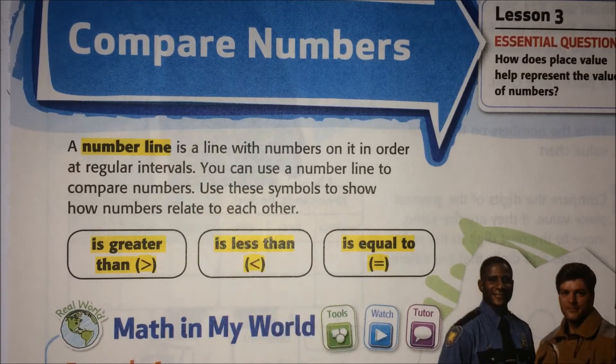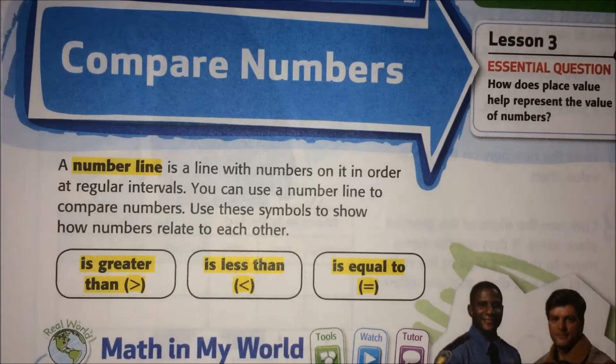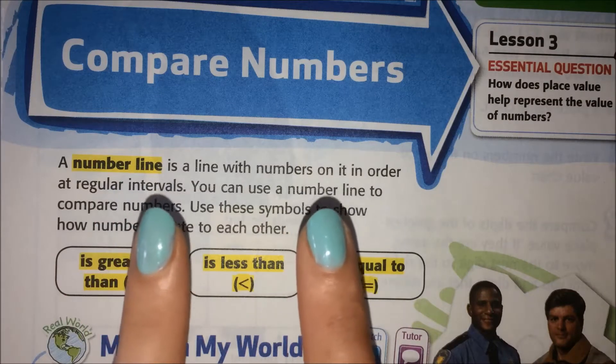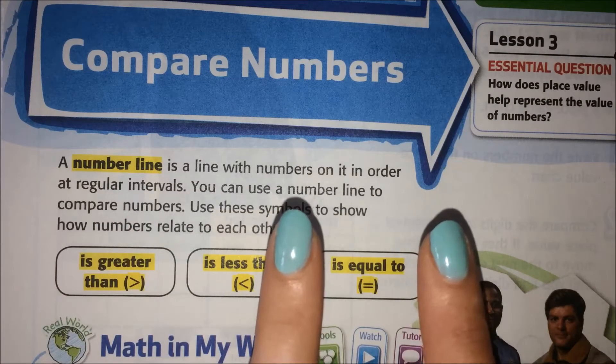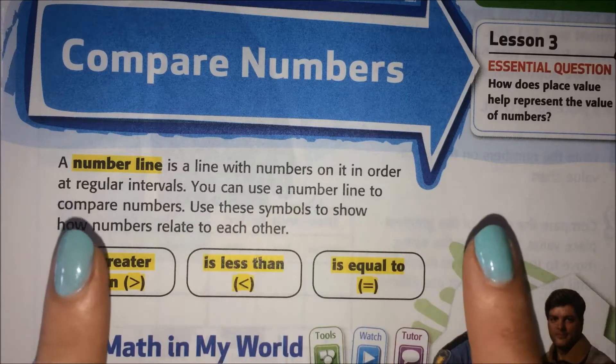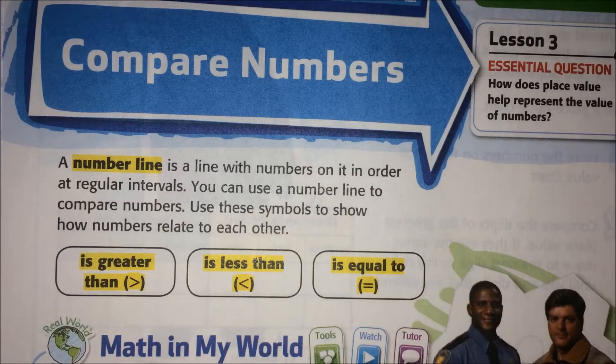A number line is a line with numbers on it in order at regular intervals. What does that mean, regular intervals? Well, regular means everything has the same size or the same shape. And intervals is like space. So regular intervals would be every space has the same shape. So if the first space is about this size, the second space is about this size. Not the first one like this and the second one all the way like this. Regular intervals.